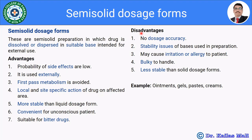Disadvantages of semi-solid dosage forms: there is no dose accuracy, and there are stability issues with the bases used in formulation. Some semi-solid dosage forms may cause irritation or allergy to the patient. They are bulky to handle and less stable than solid dosage forms. Examples of semi-solid dosage forms include ointments, gels, pastes, and creams.